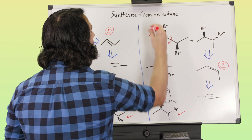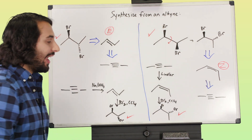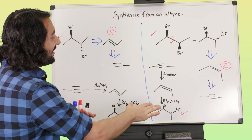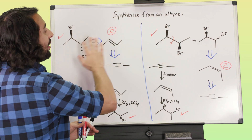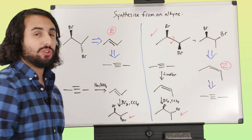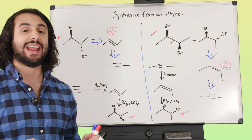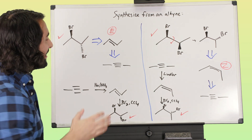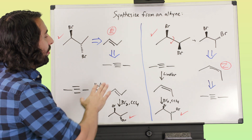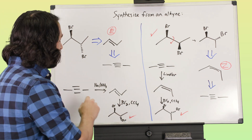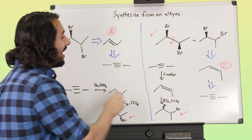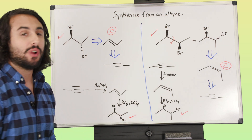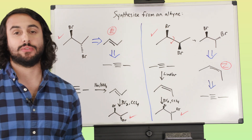We've shown the two ways of getting the desired stereochemistry on each dihalide product. The key centered around these stereospecific transformations from the alkyne to the alkene — going preferentially to E or Z respectively.